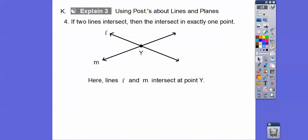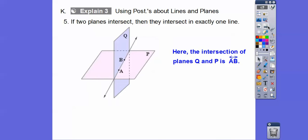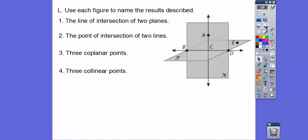If two lines intersect, they intersect in exactly one point. Here, lines L and M intersect at point Y. If two planes intersect, their intersection is exactly one line. Here planes Q and P intersect in line AB. Think of the corner of a wall — one wall intersecting another wall — that corner would be a line. Or the ceiling and a wall intersect as a line.